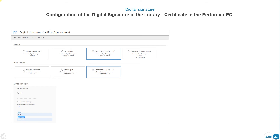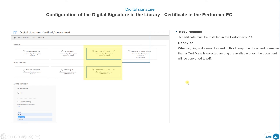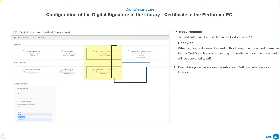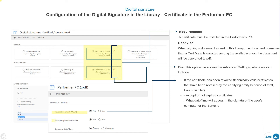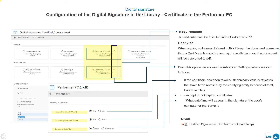Certificate in the performer PC: this time the certificate is not on the server but on the PC of the executor. When signing a document stored in the library, the document opens and a certificate is selected among the available ones, then the document is converted to PDF. From the advanced settings, we can indicate if the certificate has been revoked, whether to accept SPIRE certificates, and what date and time will appear in the signature.